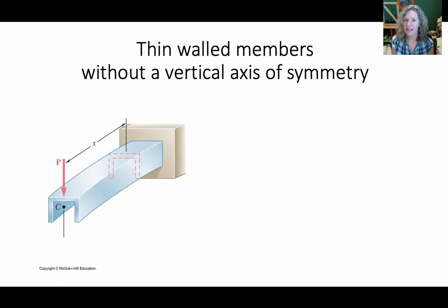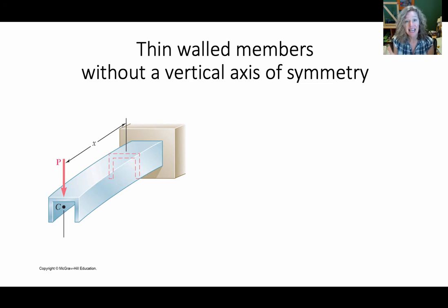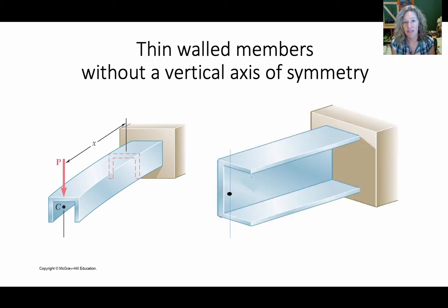We have already talked about thin-walled members — I-beams or thin-walled members. Now we want to talk about what happens if you have a thin-walled member without a vertical axis of symmetry. The image we have here: if we drew a vertical axis through the centroid, we see it is the same on the left and the right side. When we load that, the beam bends down like a diving board. What happens if we rotate the shape 90 degrees and now we look at our vertical axis and we're not the same on the left and the right?